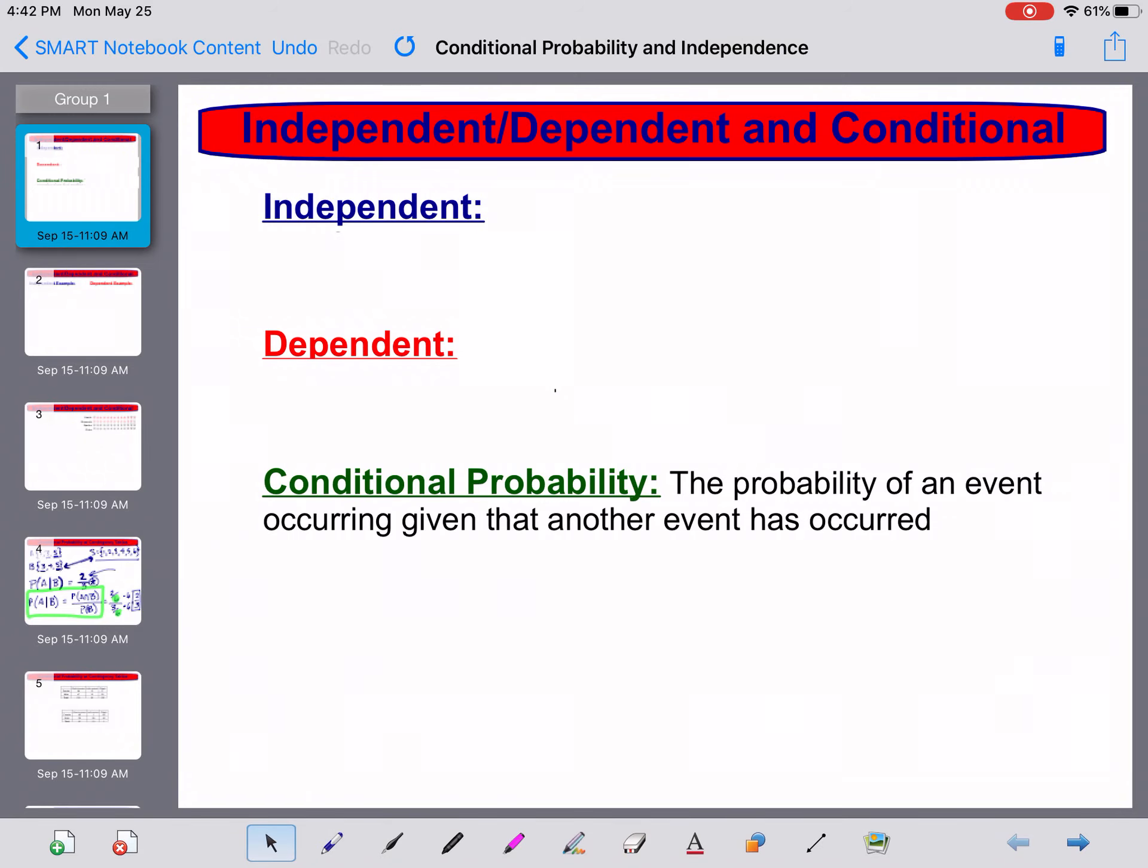Welcome back everybody. We're doing the second half here of conditional probability, independent and dependent, and we are talking about independent and dependent. So if you're following on our note sheets, you're back at the top just to do some definitions, and then we'll fill in the stuff we didn't get to before the first video. Let's do some definitions here quick.